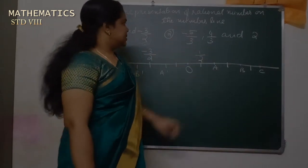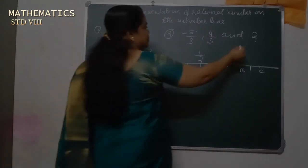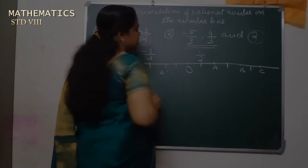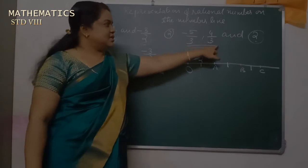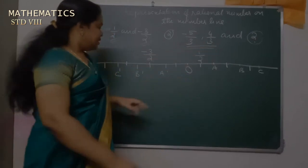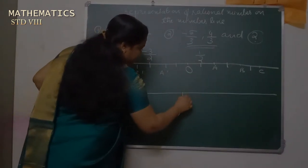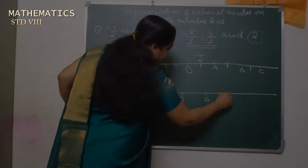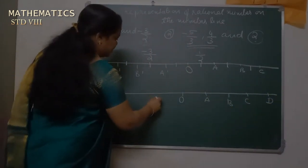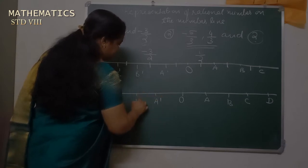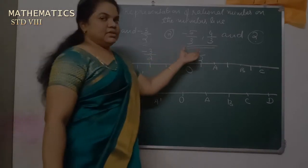Moving on to the next question: minus 5 by 3, 4 by 3, and 2. Here 2 is a whole number. For minus 5 by 3 and 4 by 3, the denominator is 3. Let's draw a number line from 0, labeling points A, B, C, D, etc. on the right and A dash, B dash, C dash, D dash, etc. on the left. The denominator is 3.